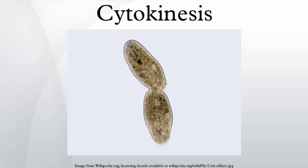Animal cell cytokinesis begins shortly after the onset of sister chromatid separation in the anaphase of mitosis. A contractile ring, made of non-muscle myosin-2 and actin filaments, assembles equatorially at the cell cortex. Myosin-2 uses the free energy released when ATP is hydrolyzed to move along these actin filaments, constricting the cell membrane to form a cleavage furrow.